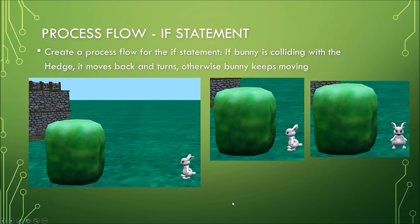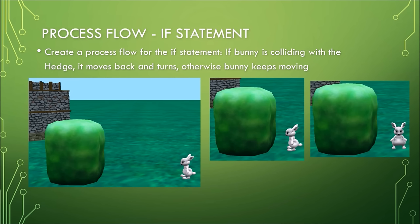Now you will practice your own process flow for an if statement. Create a process flow for: if the bunny is colliding with the hedge, it moves back and turns; otherwise the bunny keeps moving. The bunny keeps moving forward, and if the hedge is in front it moves back and turns — the turn can be in any direction you like. In your worksheet, drag the provided shapes and arrange them in the correct sequence. Pause the video and complete your process flow.